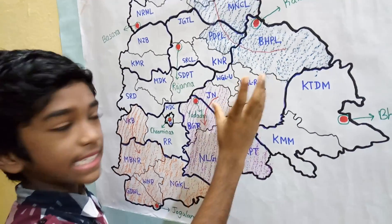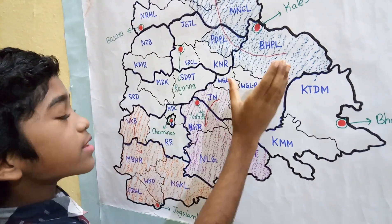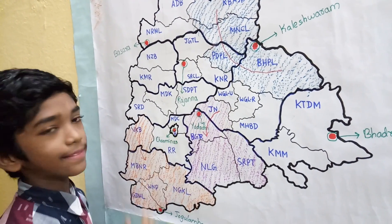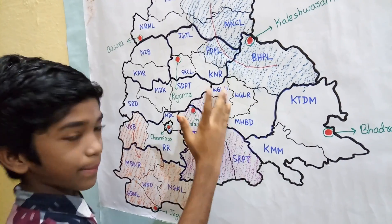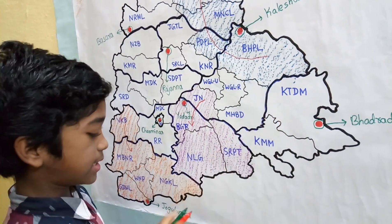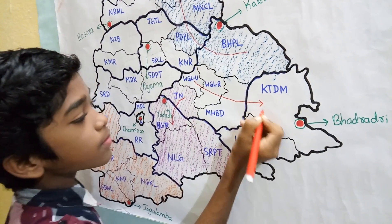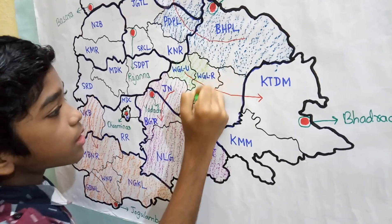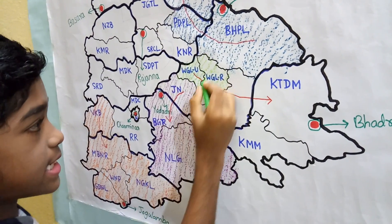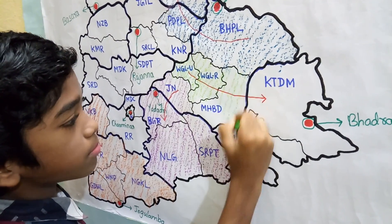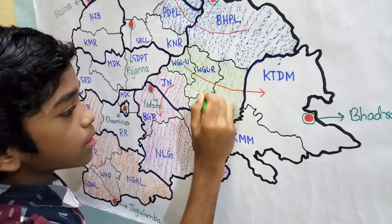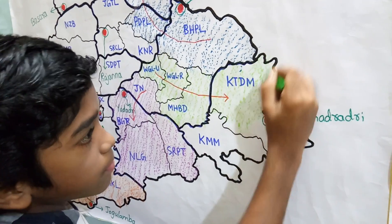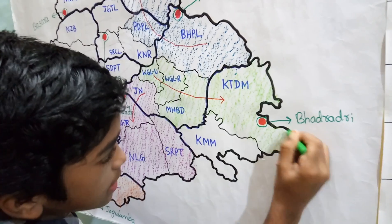Now, let us see the old Warangal district. One district, Jaishankar Bhupalpalli, went to Kaleshwaram zone, and one district, Jangaon, went to Yadadri zone. We add the remaining 3 districts to the old Khamam district, so that we get Bhadradri zone. This zone has 5 districts: Warangal Urban, Warangal Rural, Mahabubabad, Bhadradri Kothagudem, and Khamam.